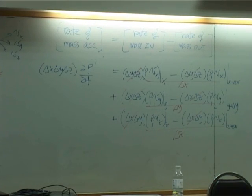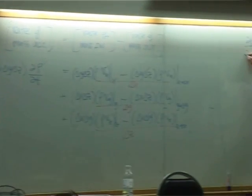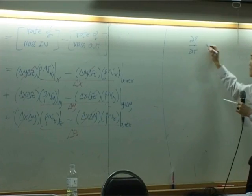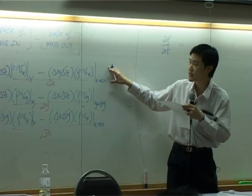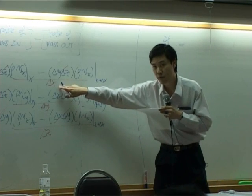After taking a limit, left-hand side would remain the same, but the right-hand side, the first term, the limit approaching delta x approaching zero,